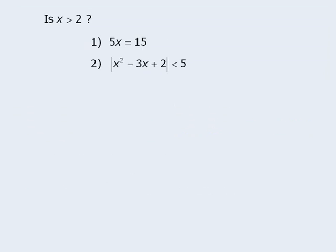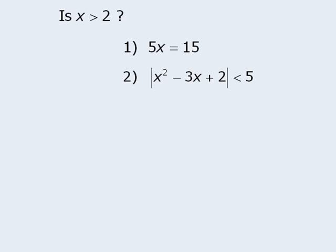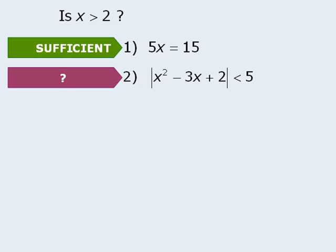Let's look at an example. In this question, we want to determine whether x is greater than 2. Statement 1 provides us with a very simple equation. Since we could solve this equation for x, we can see that statement 1 is sufficient. Now statement 2 is not as simple. Let's say that we are unable to determine whether or not this statement is sufficient. At this point, we are unable to determine the correct answer, so we must guess. Keep in mind that we were able to determine that statement 1 is sufficient, so we can limit our guesses to a few answer choices.